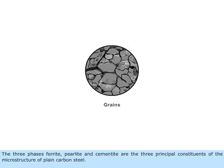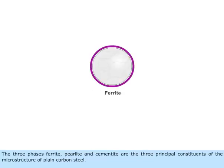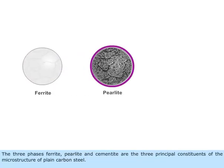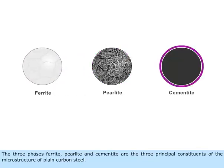The three phases — ferrite, pearlite, and cementite — are the three principal constituents of the microstructure of plain carbon steel.